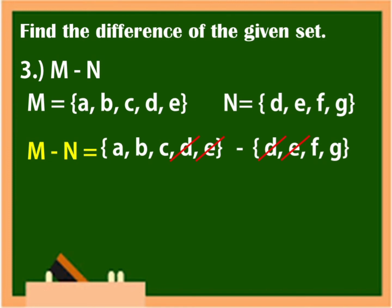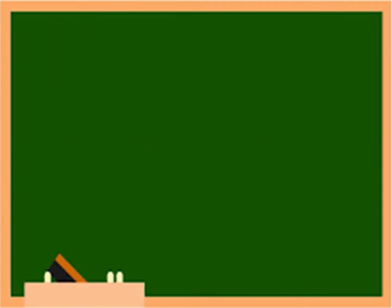What are the remaining elements? A, B, C. Very good. Now, why is it that F and G are not included in your answer as the difference of M and N? Because F and G are not part of set M.